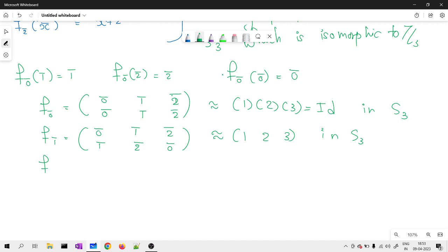Similarly, if I think about F of 2̄, it would be same as 0̄ goes to 2̄, 1̄ goes to 0̄, and 2̄ goes to 1̄. And if I see, it is isomorphic to (1, 3, 2) in S3.